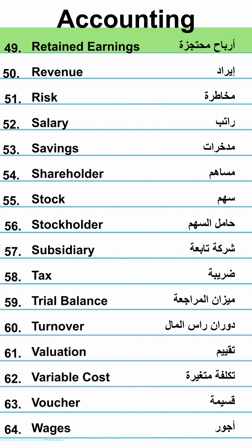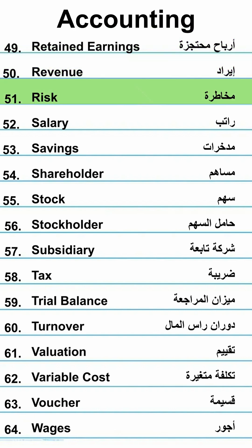Retained earnings — Arbaah mahtajaza. Revenue — Irad. Risk — Mughatara.